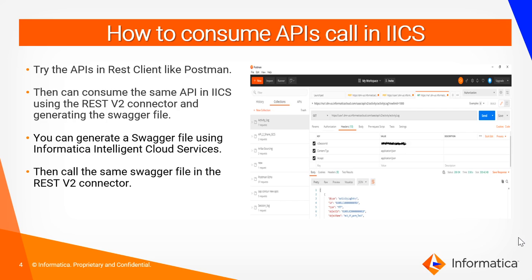How can we consume this API call in IECS? A user can test this API call outside IECS using some external REST client like Postman. Once the API is successful in the external tool like Postman, they can consume the same API in IECS using the REST V2 connector and generating the swagger file. You can generate the swagger file in IECS using the swagger utility and call the same swagger file in the REST V2 connection.